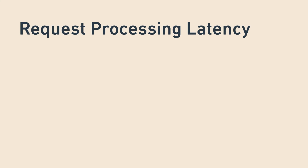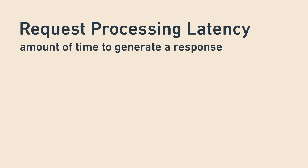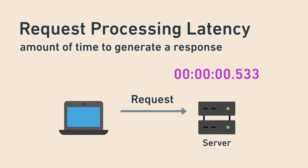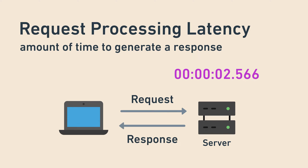Going back to our terms — latency and throughput — the request processing latency, usually measured in milliseconds, is the amount of time it takes to generate the response for a request. In other words, it's the time between when the server receives the request and when it sends the response. Generally, this goes up when the server is doing more work to process the request.